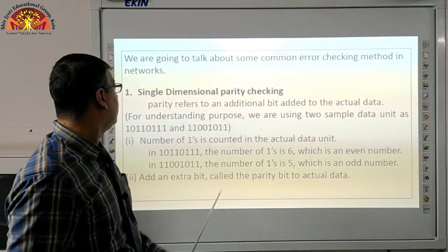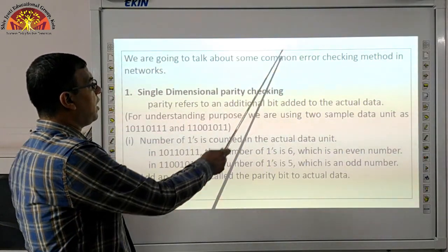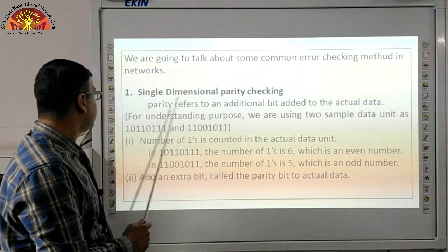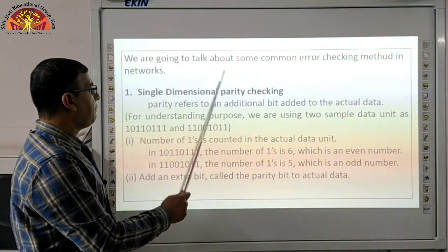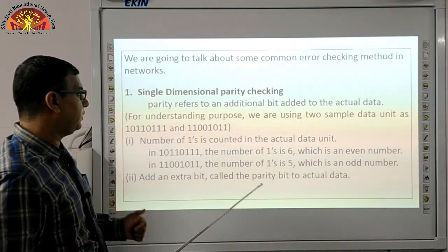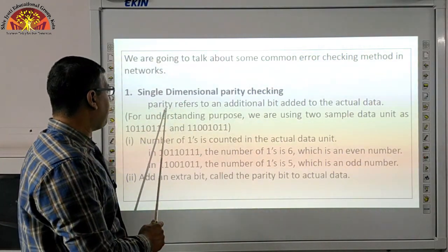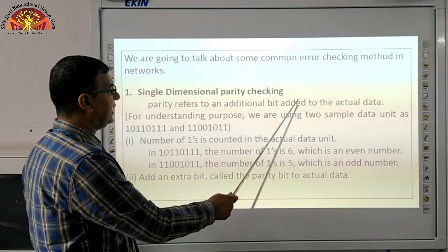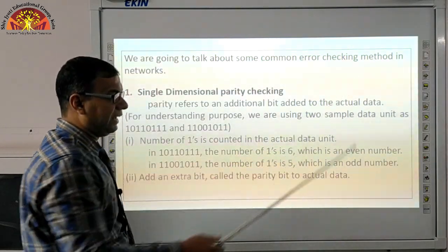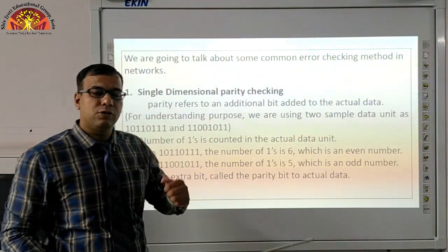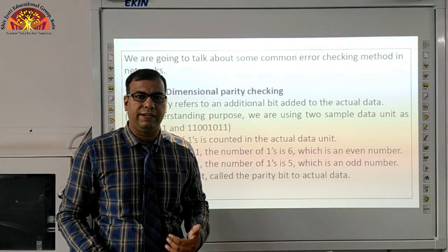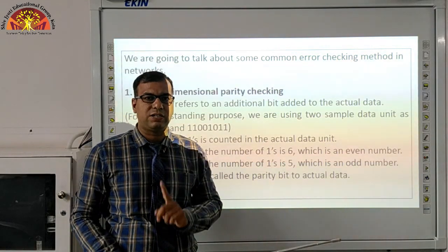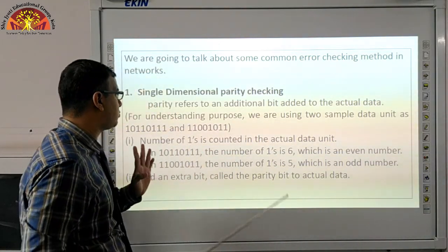Now we are going to talk about some common error checking methods in networks. First is single dimensional parity checking. Parity refers to an additional bit added to the actual data. So whatever our actual data is, we add one bit to it. For understanding, we are using two sample data units — the first data and the second data.